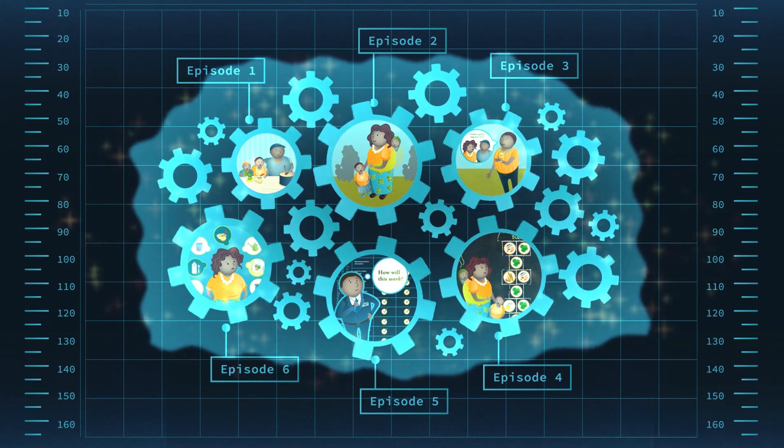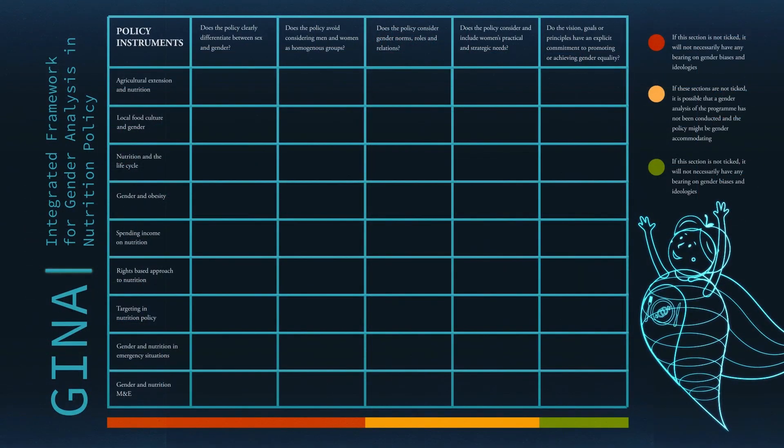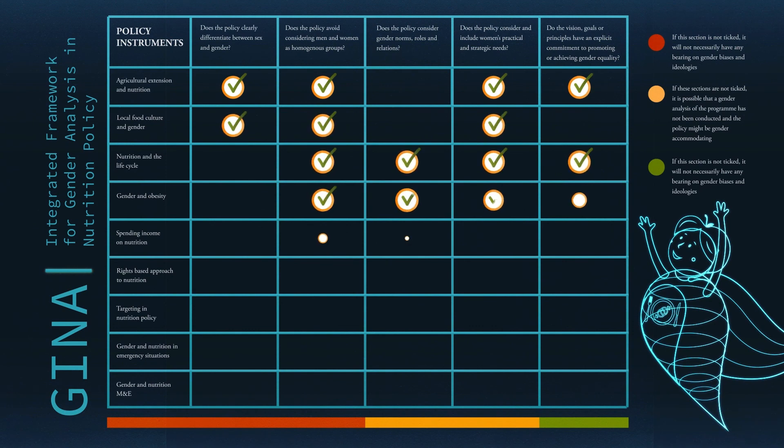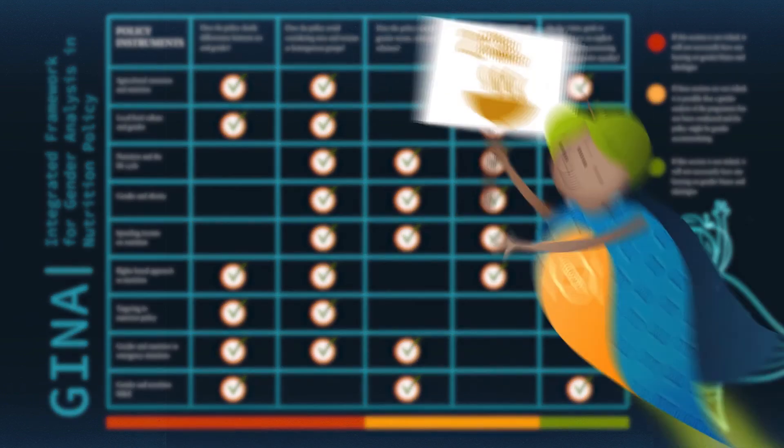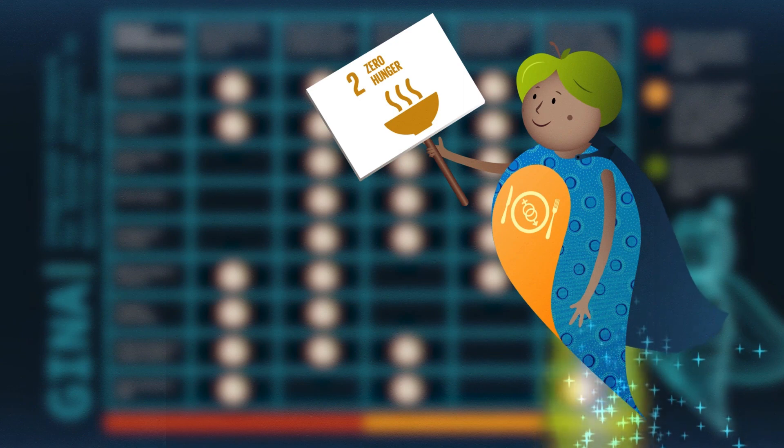If you keep these steps in mind, you can also develop a policy that advances gender equality and improves nutrition at the same time. Remember, gender and nutrition are central to several of the sustainable development goals, especially SDG 2.